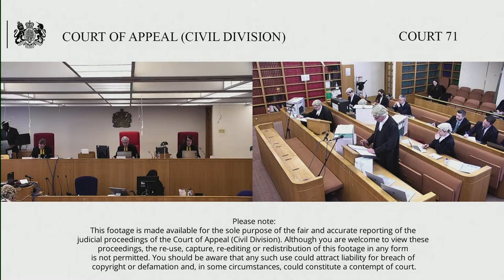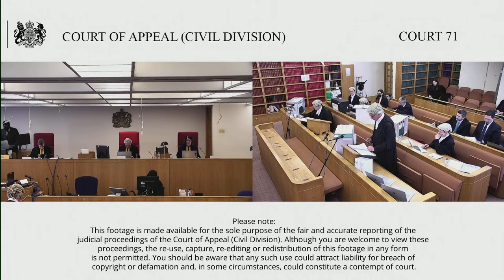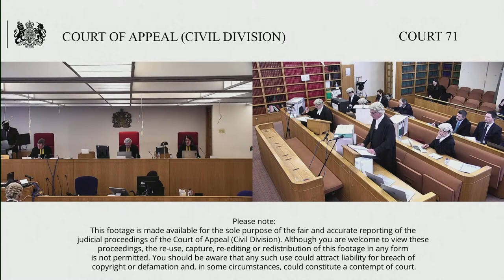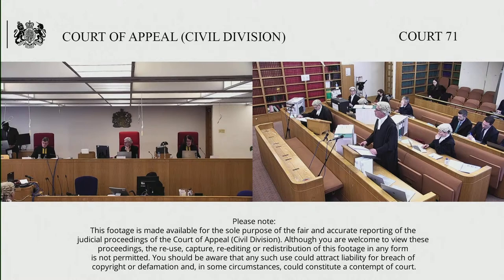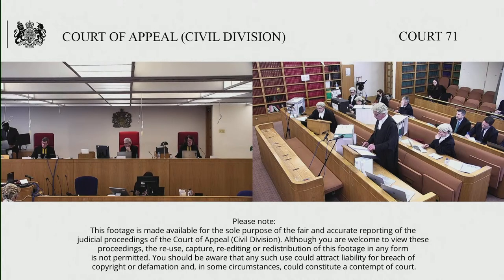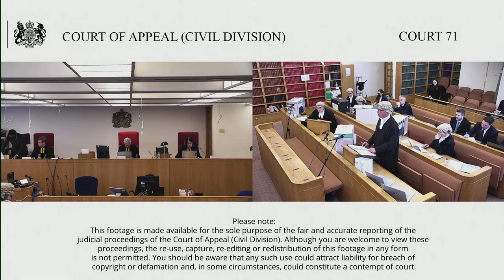In reverse order: it is said we don't have permission to appeal in relation to costs because the costs order reflected what was agreed between the parties. After the judge provided his judgment in draft, we sought to agree consequential matters. The order at tab 6 was made without a hearing for consequentials, pending a hearing, and provided that we should pay the costs to be assessed on the standard basis, page 79 of the bundle. Subsequently we were able to agree an amount to avoid assessment, and that was dealt with in the subsequent order in which we were given permission. We submit that the fact that the amount paid was subsequently agreed does not mean that we don't have permission to appeal against the whole of the judge's order at tab 6, which includes the order that we should pay costs.